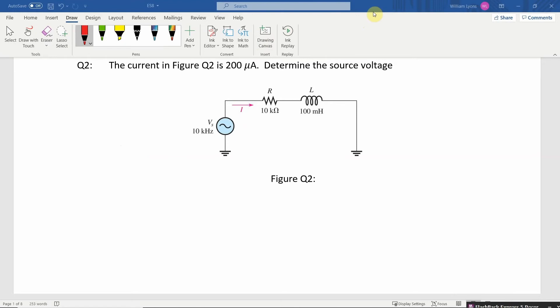So this question, the current in figure 2 is given at 200 microamps, we want to determine the source voltage. So this here represents the current I, which is 200 microamps, we are told the inductance is 100 millihenries.